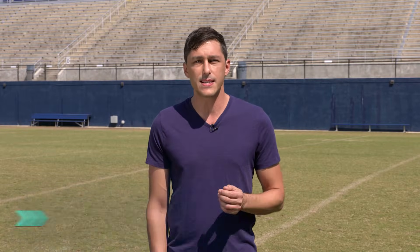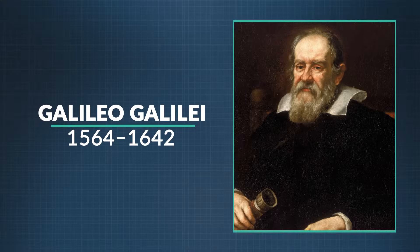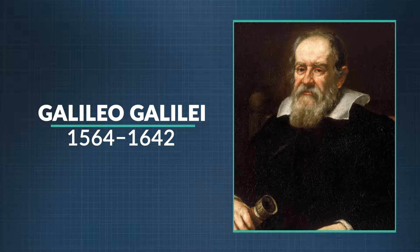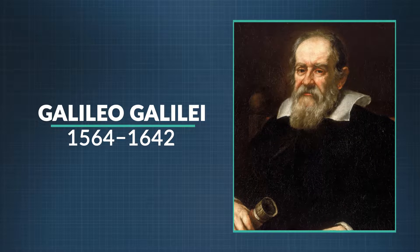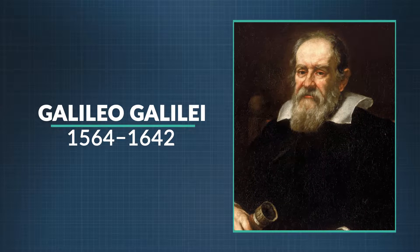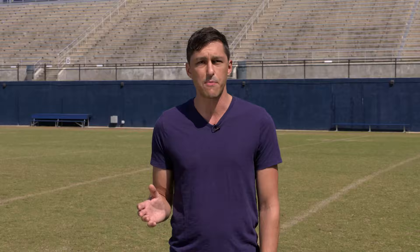For thousands of years, scientists thought that how fast something fell depended on how heavy it was. Seemed only logical. But in the 16th century, one of the all-time Science Hall of Fame geniuses, Galileo, had an idea. He suspected that all objects, regardless of their mass, fell at the same rate of acceleration.